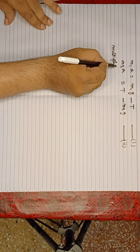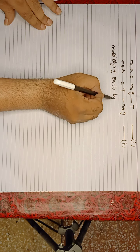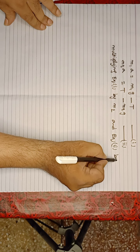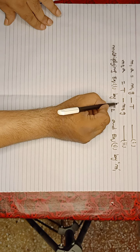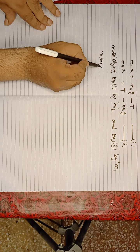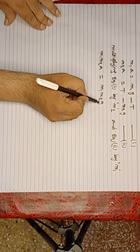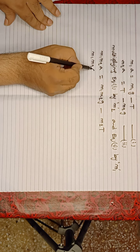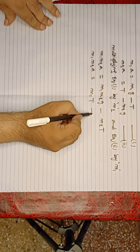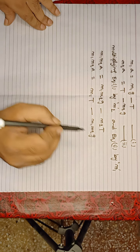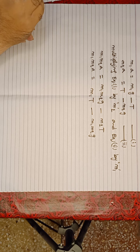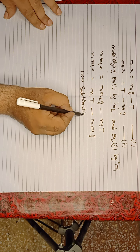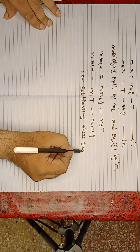Multiplying equation 1 by M2 and equation 2 by M1. This gives M1M2A equals M1M2G minus M2T for the first equation, and M1M2A equals M1T minus M1M2G for the second equation. Now we subtract these two equations.